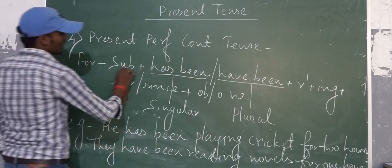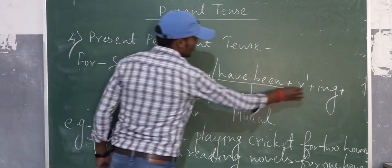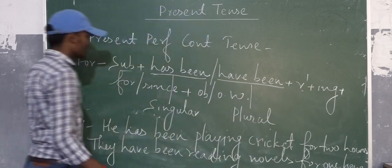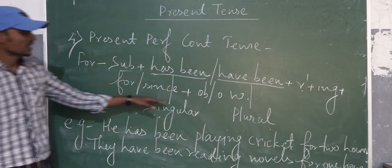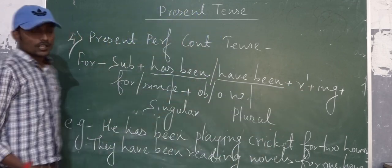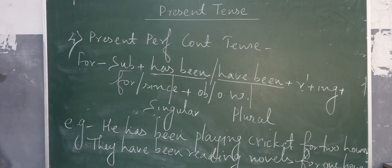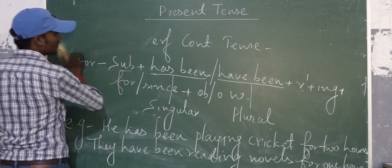So, subject plus has been or have been plus first form verb with -ing, then use of 'for' or 'since', then object. Now I am going to discuss with you the difference between Present Continuous and Present Perfect Continuous.